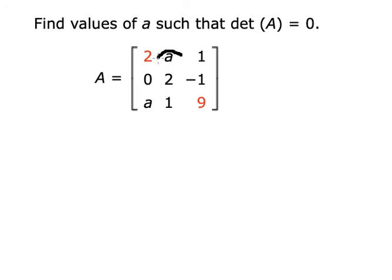We need to find the value of a to make sure that the determinant of A equals zero. So we need to know the formula for a 3 by 3 matrix. It should be like this.